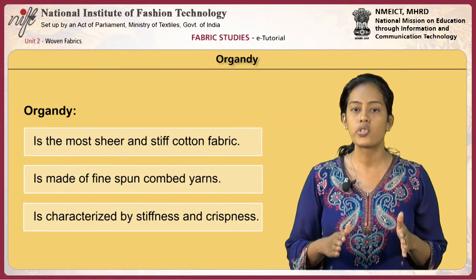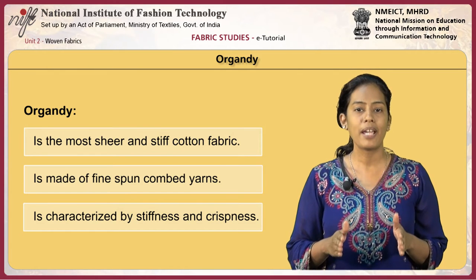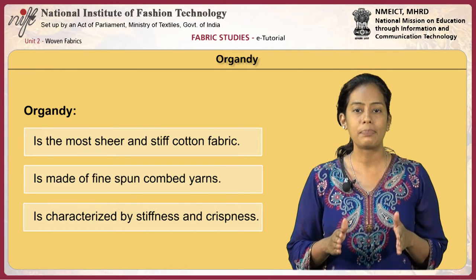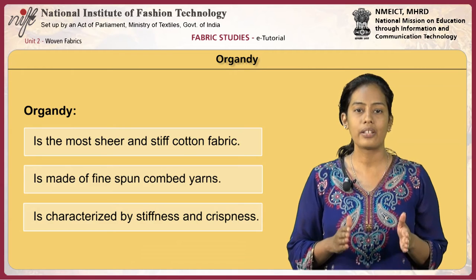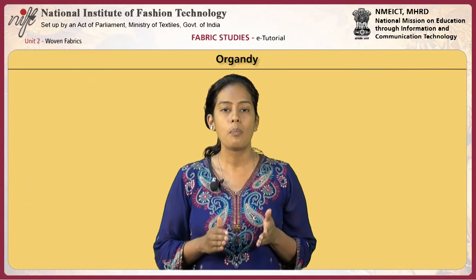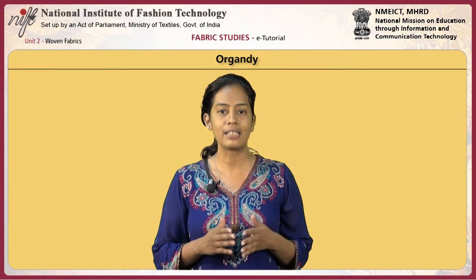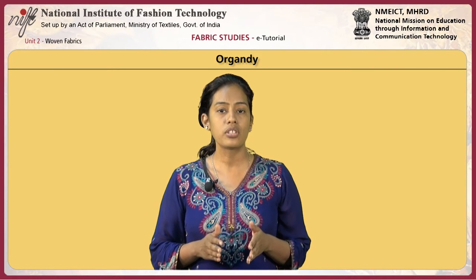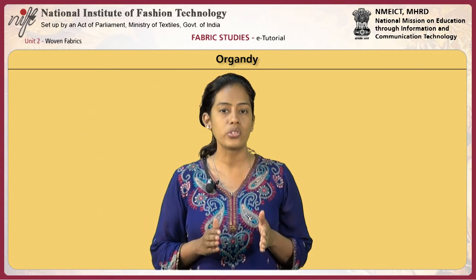Organdy is the most sheer and stiff cotton fabric, made of fine spun combed yarns. The fabric is characterized by stiffness and crispness. More stiff varieties are used in home furnishing fabrics like curtains, while softer organdy varieties are used in summer wear such as blouses.